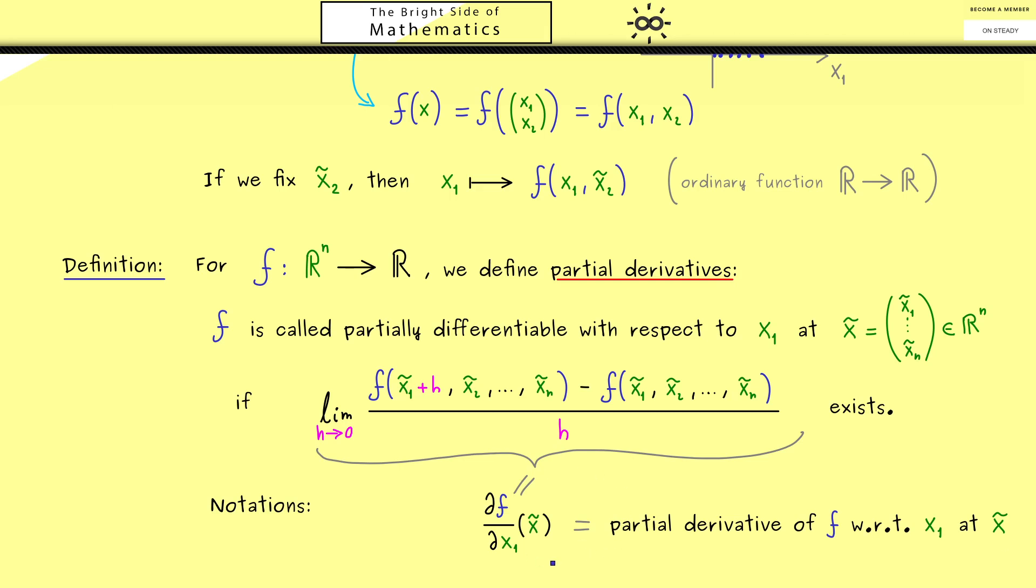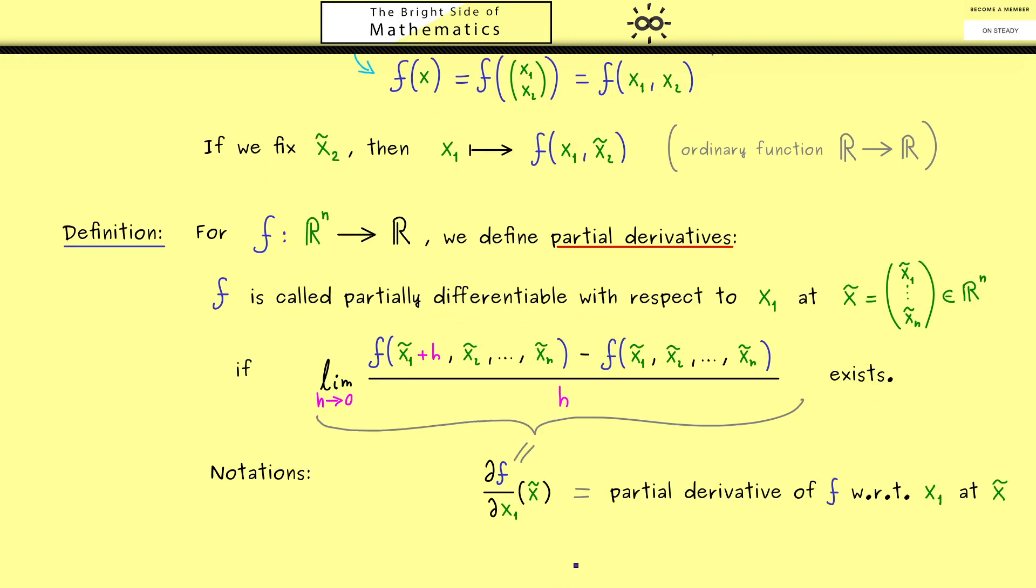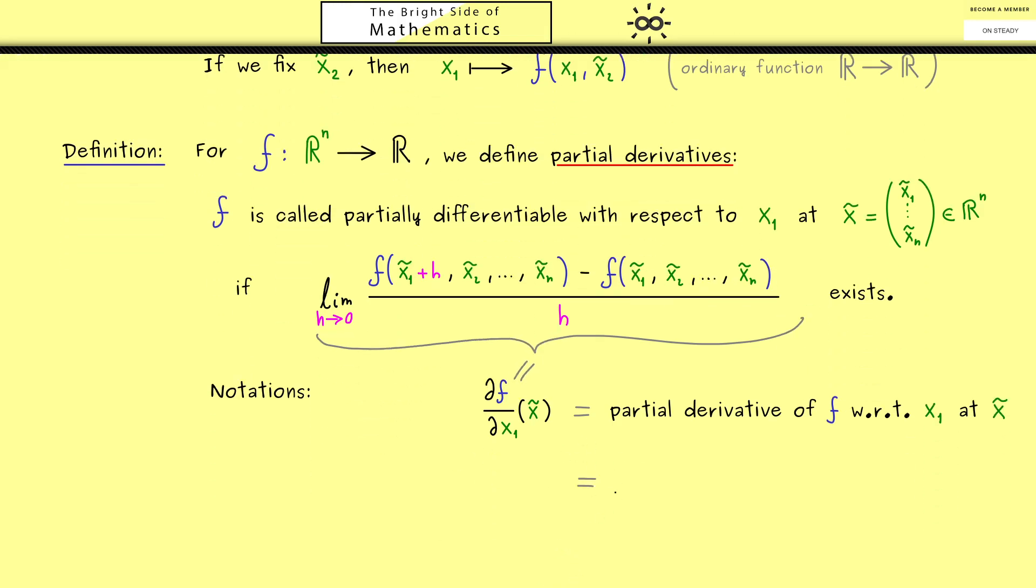Moreover, as I said before, there are also a lot of other notations one uses for this number. So for example, you often see the partial d with x₁ in the index. And also there, you shouldn't forget about the point you put in. Then in the same sense, one also uses a capital D instead of the partial d. So that's also possible to say that we have a derivative with respect to x₁. And indeed, there is even a shorter notation one uses when there is no confusion. We put the index x₁ directly to the function f. Okay, and with this, I would say these are the most common notations for the partial derivatives.